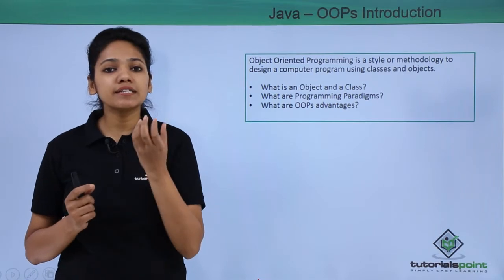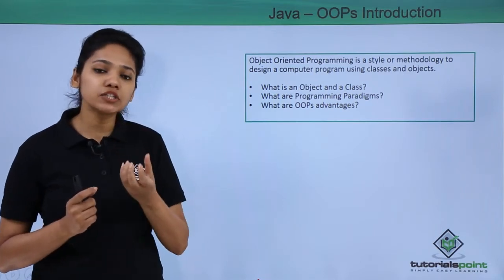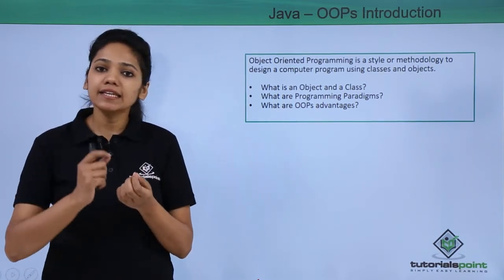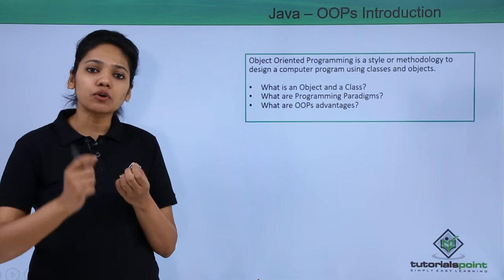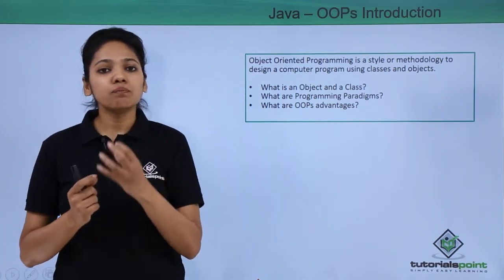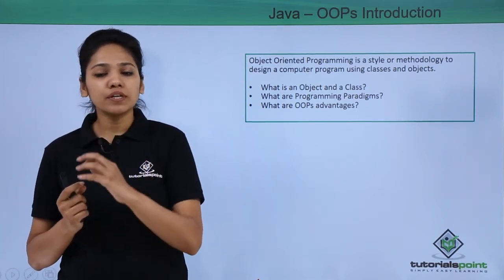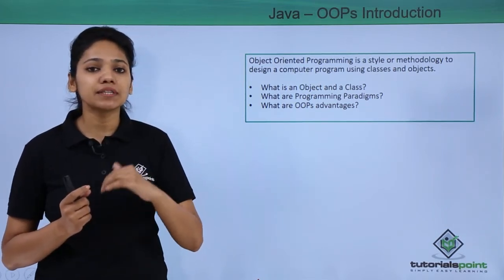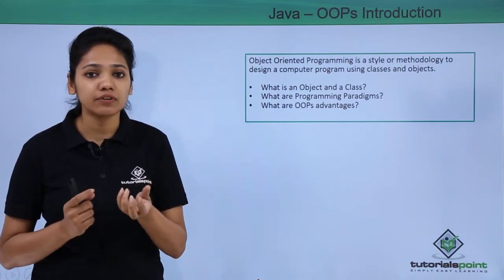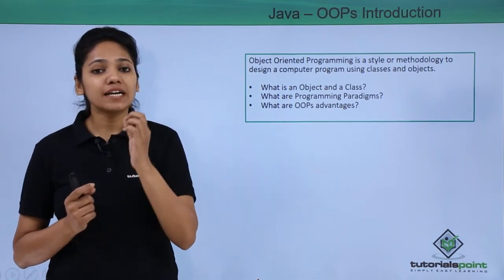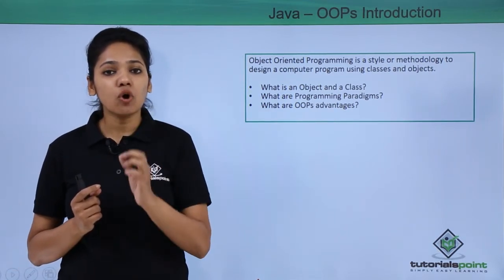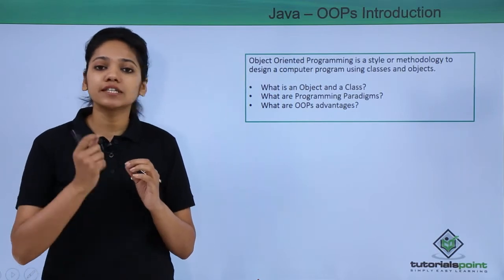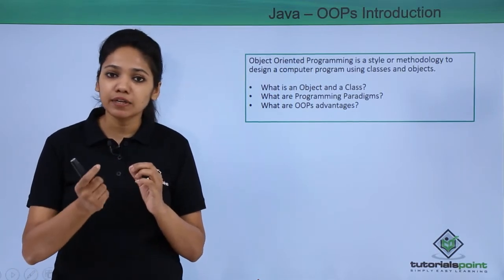Object-oriented programming is nothing but a combination or collection of certain data and the instructions to process that data. When you perform operations on this data, these are nothing but state and certain behavior. So an object is nothing but that which defines certain state and behavior.